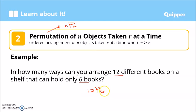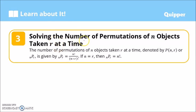Solving the number of permutations of n objects taken r at a time: nPr equals n factorial over n minus r factorial. If n equals r, then nPr equals n factorial. So nPn is just n factorial.